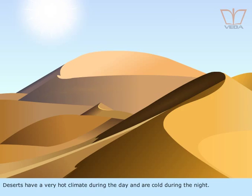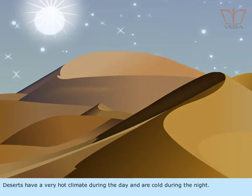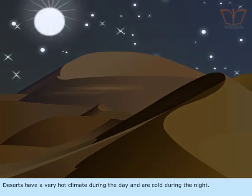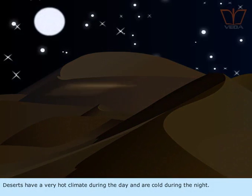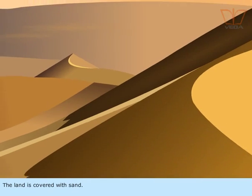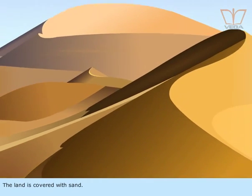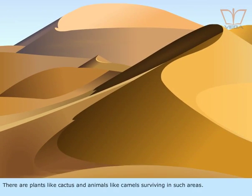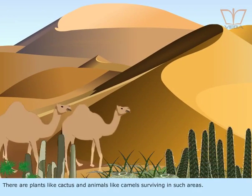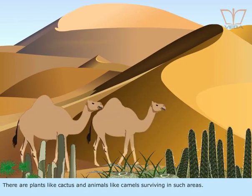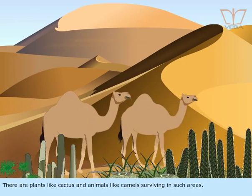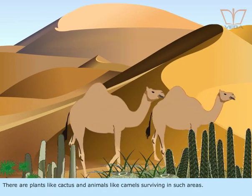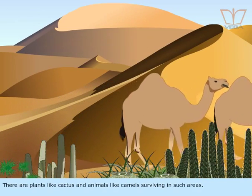Deserts have a very hot climate during the day and are cold during the night. The land is covered with sand. There are plants like cactus and animals like camels surviving in such areas.